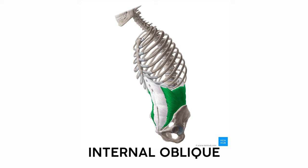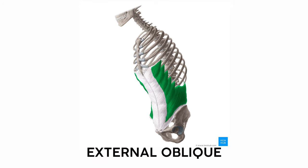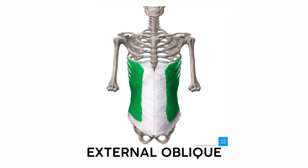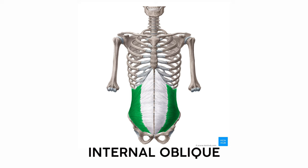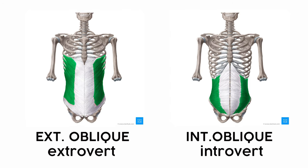The layers are obvious giveaways — the internal is deep to the external — but you might not always know which layer you're looking at. Fortunately, you can use the direction of the muscle fibers to tell them apart. The external oblique fibers run this way and look like they're pointing up, while the internal oblique fibers point down. To remember this, I imagine an extrovert and an introvert at a party: the extrovert is looking up and happy, while the introvert is looking down at their drink — just like the external oblique fibers point up while the internal oblique fibers point down.